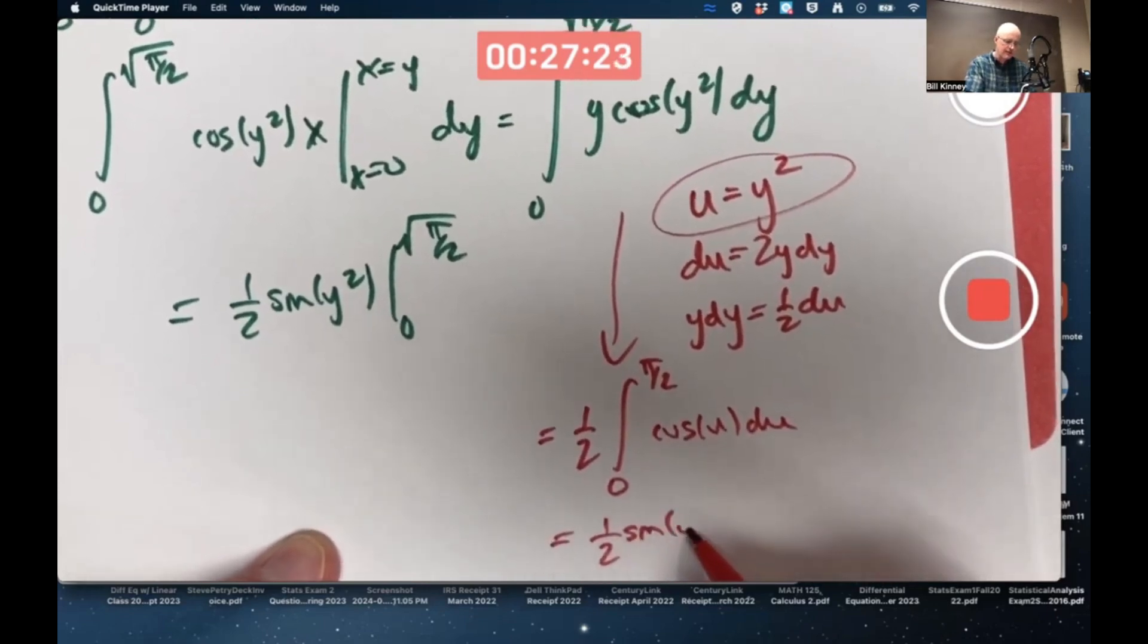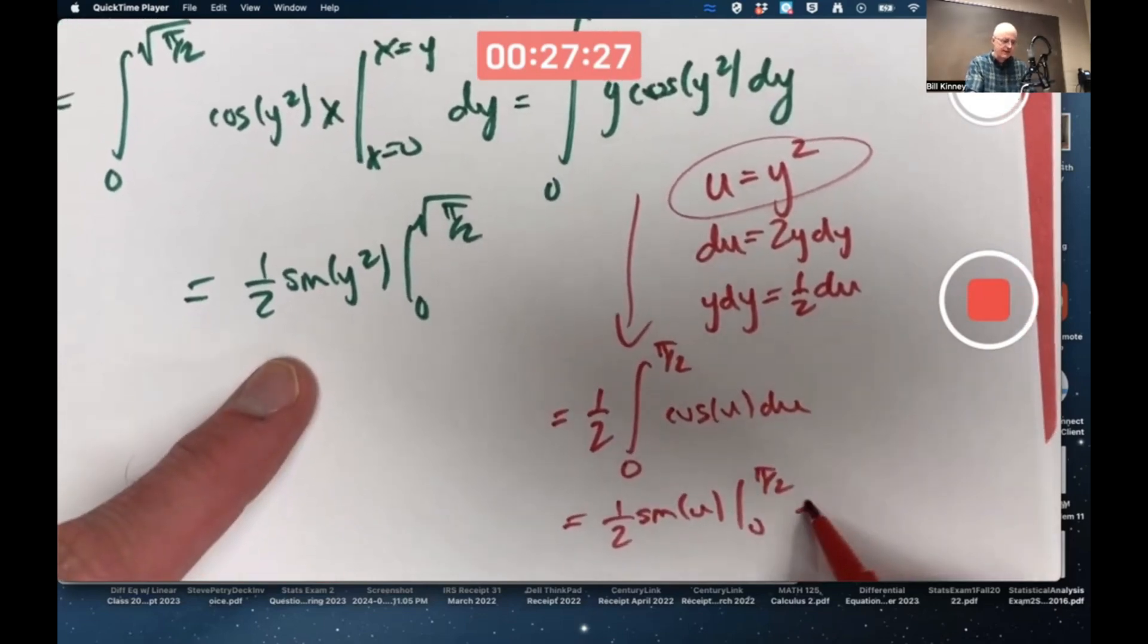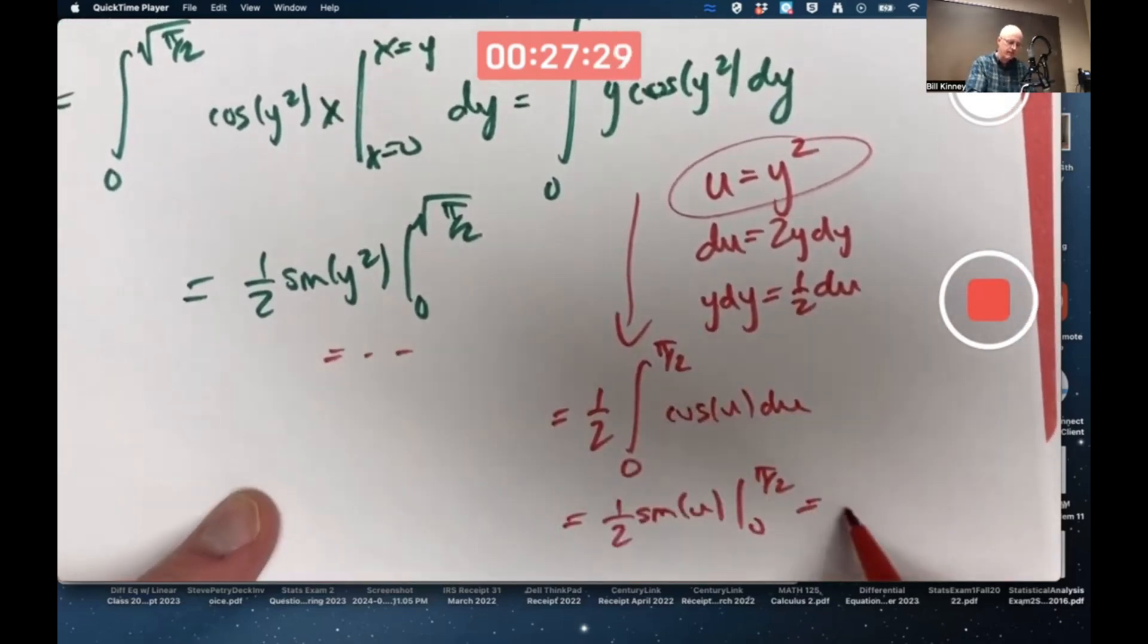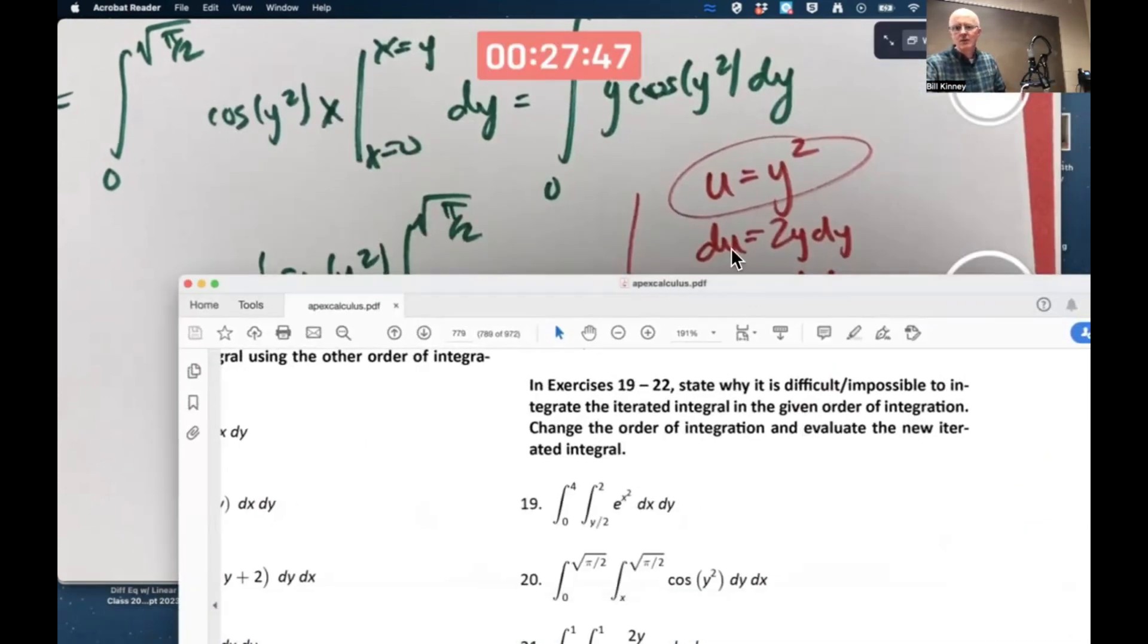And do that, you're going to get 1 half sine of u from zero to pi over two. And both of these are going to give you the same thing when you evaluate. What, 1 half in the end? Is that right? Did I do that right in my head? Yeah. 1 half. 1 half.